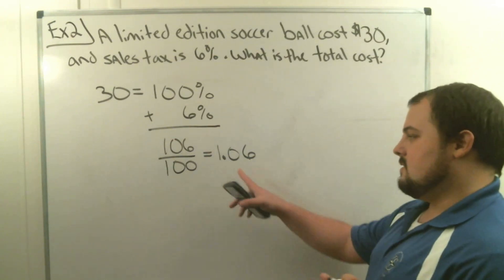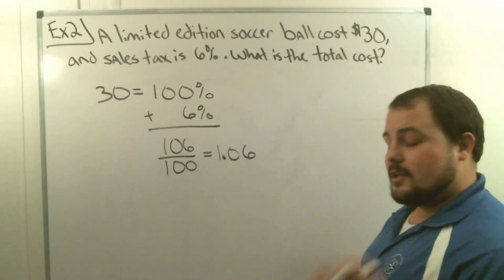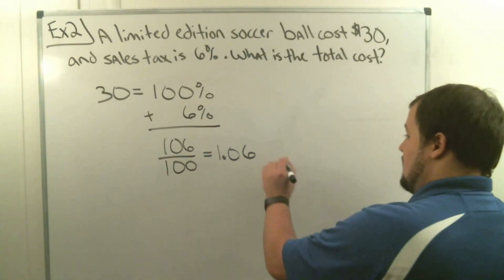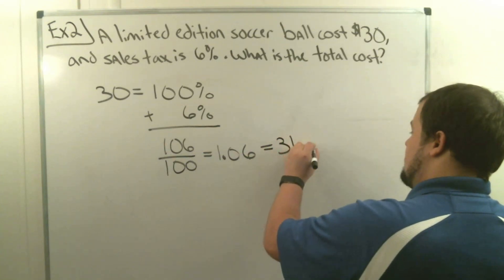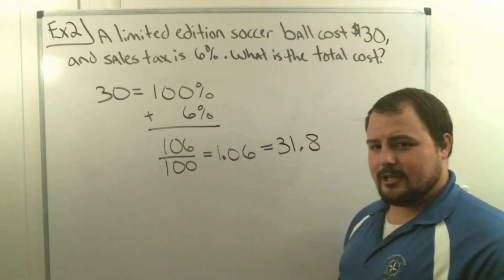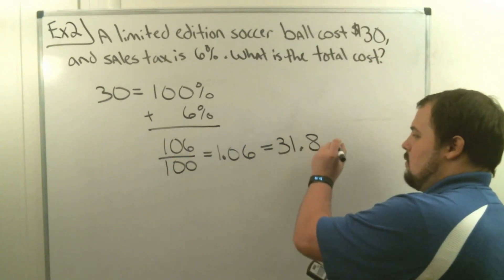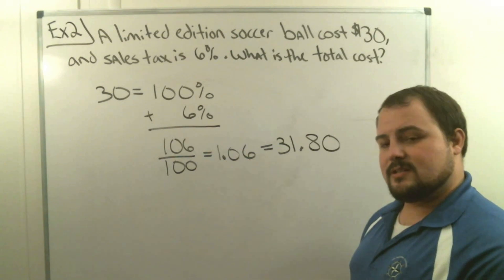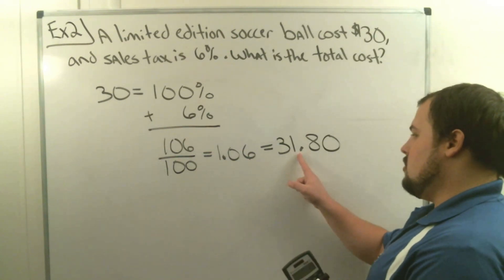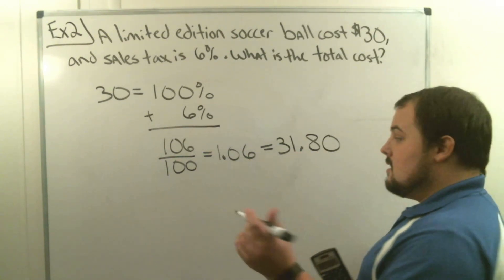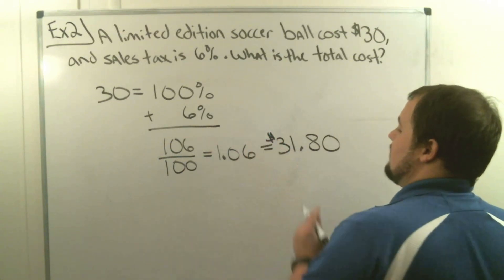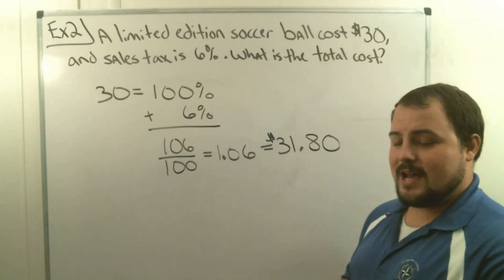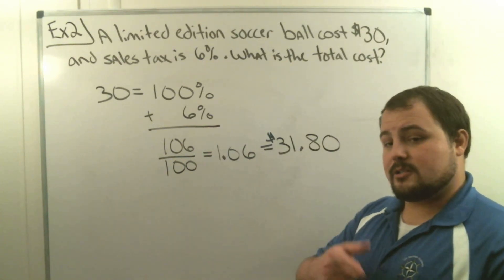Once we have 1.06 as a decimal, we multiply it by the total: 1.06 times $30. The calculator gives us $31.8 — since money goes to two decimal places, we write that as $31.80. If the ball originally cost $30 and we pay 6% tax, the total is $31.80.